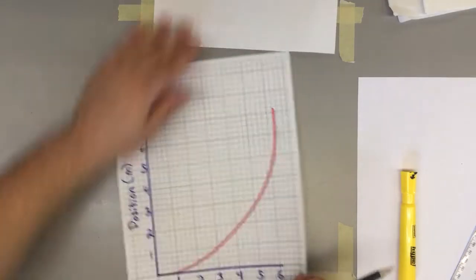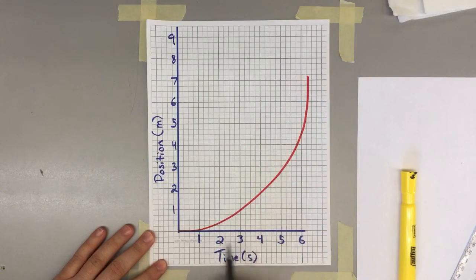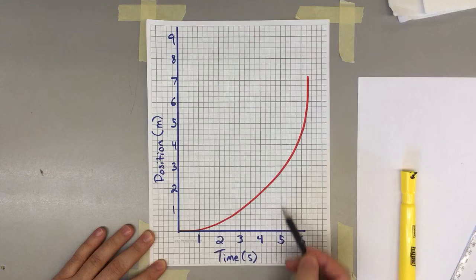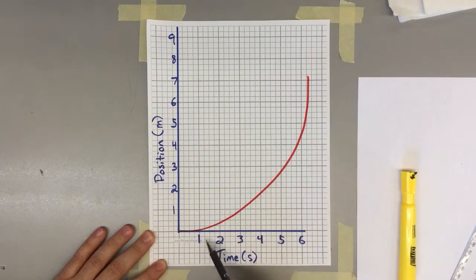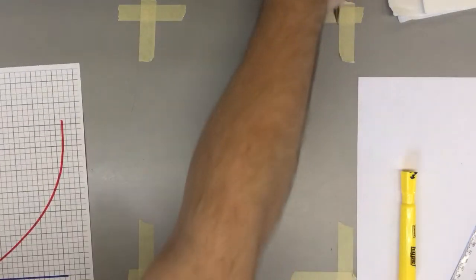So basically, since we know it's speeding up as time goes on, we may want to know what speed they're at at two seconds or we might want to know how fast they're going at five seconds. Obviously here, they're going a lot faster at five seconds versus two seconds. We're going to teach you how to do that.